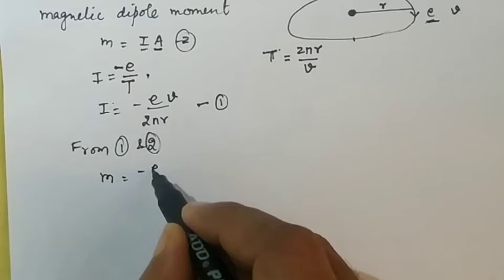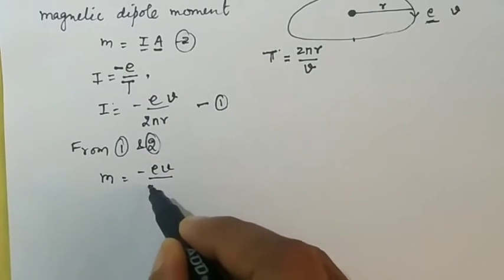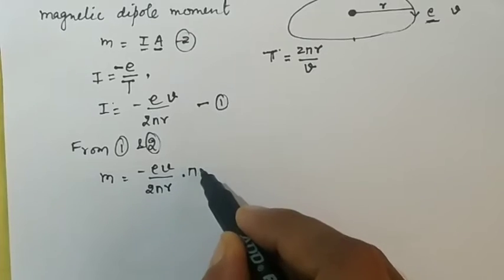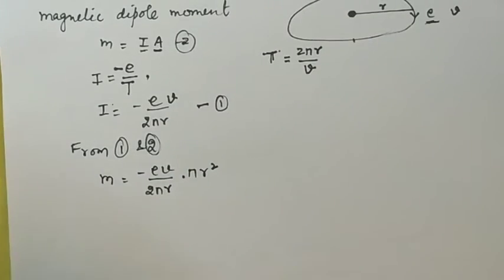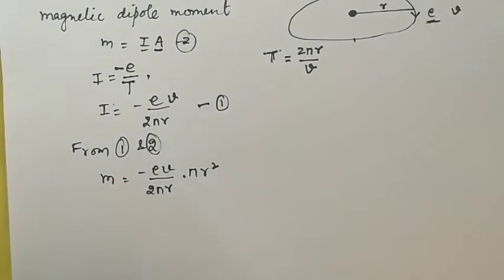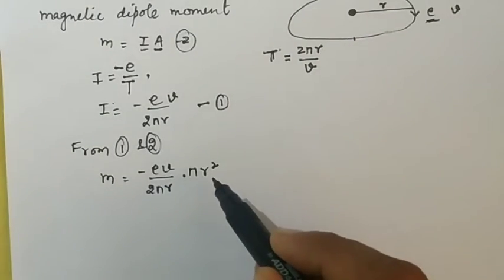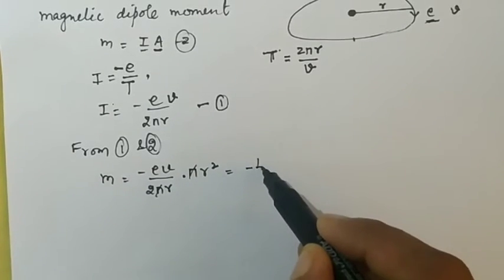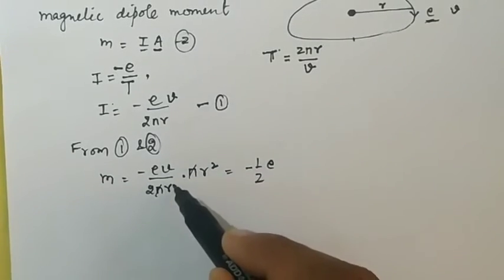From equations 1 and 2, we get magnetic dipole moment is equal to minus eV divided by 2πr, and area of the loop, that is πr², since r is the radius.